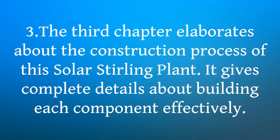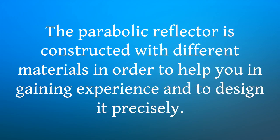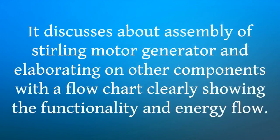The third chapter elaborates about the construction process of the Solar Sterling Plant. It gives complete details about building each component effectively. The explanation is so clear that even a beginner can construct an effective plant. The parabolic reflector is constructed with different materials to help you gain experience and design it precisely. The fourth and final chapter covers assembling them to give a complete engine, discussing the assembly of the Stirling motor generator and elaborating on other components with a flow chart clearly showing the functionality and energy flow.